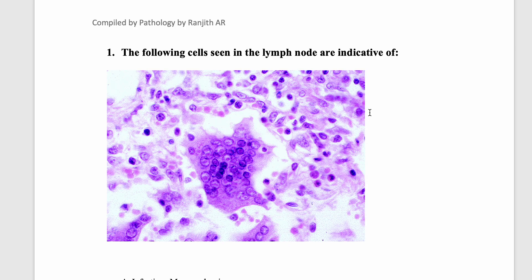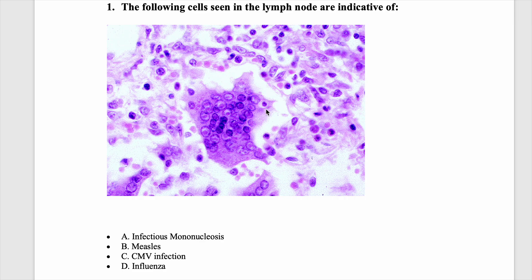The following cells in the lymph node are indicative of which disease? It's a very simple thing. If you look at this, you have a very classical giant cell, a multi-nucleated giant cell. You do have an intranuclear pink eosinophilic inclusion, and somewhere here, though not clear, you do have intracytoplasmic inclusion as well. Intranuclear eosinophilic and intracytoplasmic eosinophilic inclusions — think of measles. Though measles is very rare in the lymph node, this is a classical Warthin-Finkeldey giant cell, which is suggestive of a measles infection.